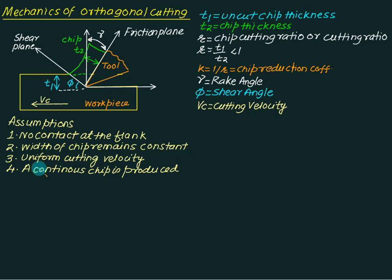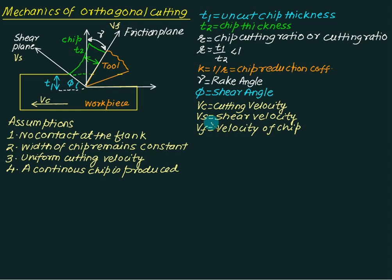The velocity along the shear plane is called vs, the shear plane velocity. The velocity of the chip is measured along the friction plane and is called vf, the chip velocity. So vs is the shear velocity or shear plane velocity, and vf is the velocity of the chip relative to the tool.